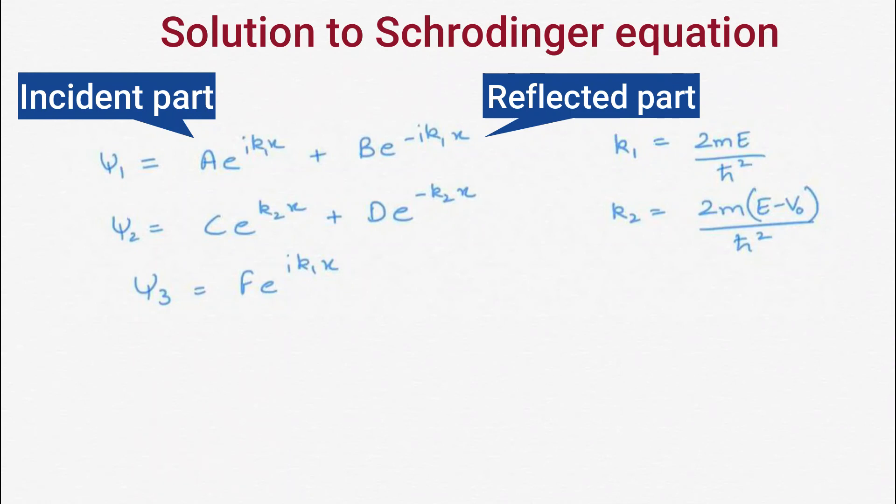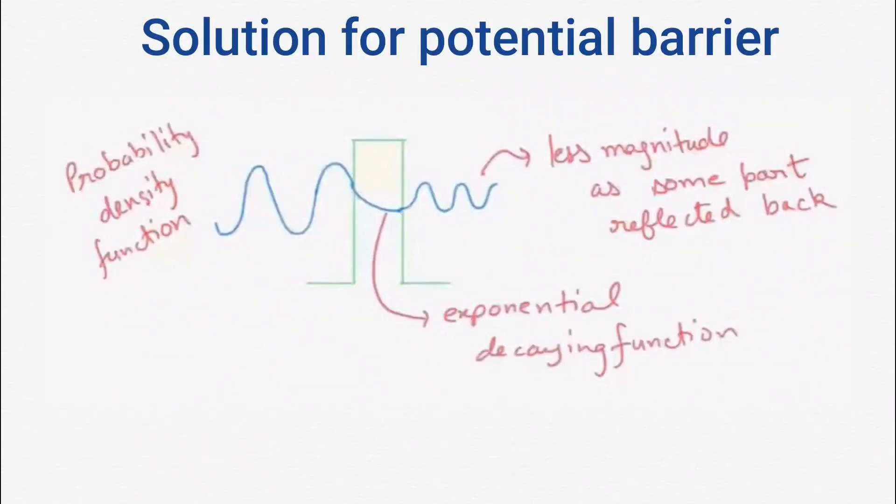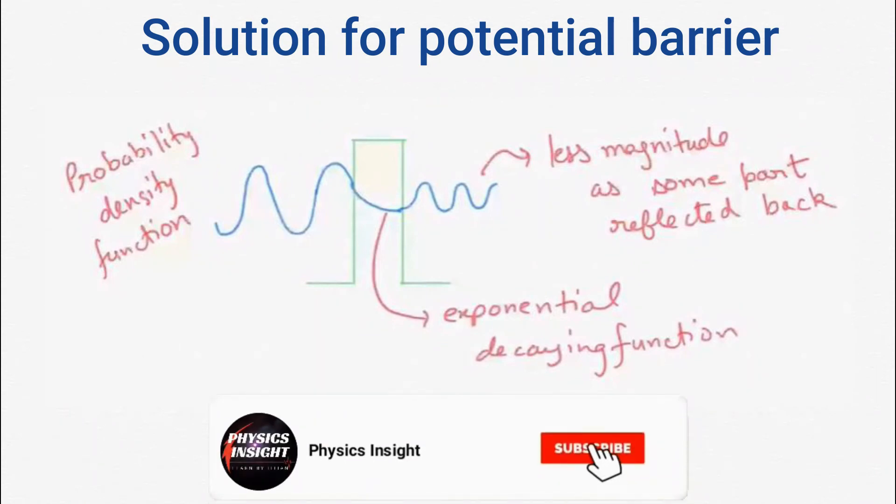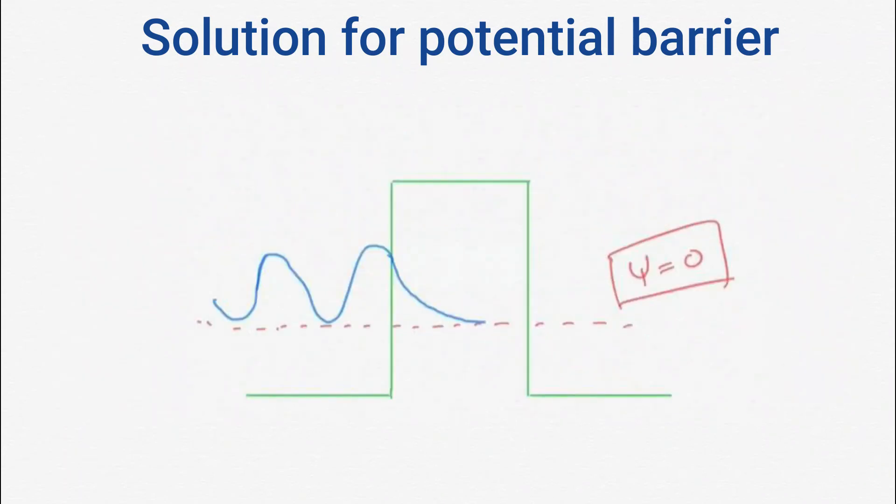Otherwise it comes out to be zero. When we plot the probability density function for all three regions, it comes out to be this. Now here there is one more factor to be taken care of: as we have exponential decaying function in region 2, and if we have a wider potential barrier, we may have no wave function in region 3 as it will die in region 2.